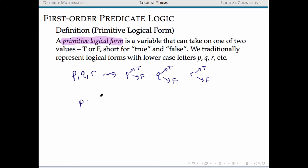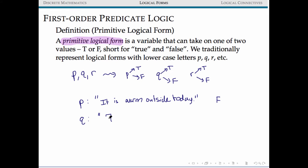These primitive logical forms would eventually be replaced with statements — things like 'it is warm outside.' Since we're living in central Maryland midwinter, that statement has a truth value of false. We also had truth statements that were more mathematically relevant: the statement '7 is less than 5' is also false, while '3 divides 9' is a mathematical statement that's true. Our primitive logical forms take on some truth assignment — true or false — but ahead of time they are really just placeholders.